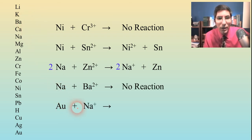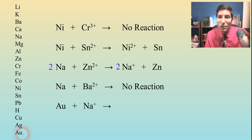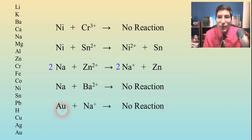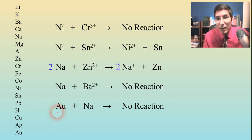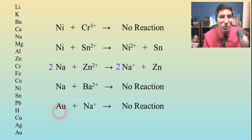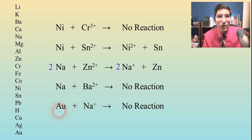What about gold and sodium ions? There's nothing underneath gold on the series, so that's a no reaction. This explains why coins and jewelry are often made of gold — if you were to immerse your gold ring in a salt solution, you don't want it to corrode. It's a good thing gold is so far down on the activity series.